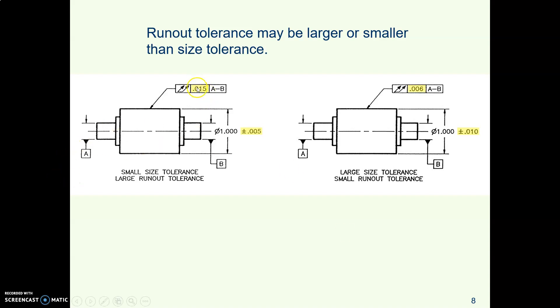The flatness tolerance is always a smaller number than the size tolerance. Well, here in the example on the left, we are seeing a size tolerance on the diameter dimension of plus or minus five thousandths. But in the runout control, we are seeing a tolerance zone that's fifteen thousandths, so that's bigger than the size tolerance. In the part on the right, things are more like they are with other kinds of geometric controls. The size tolerance is plus or minus ten thousandths, and in this part, the total runout is a tolerance zone that is six thousandths, so it's a refinement.